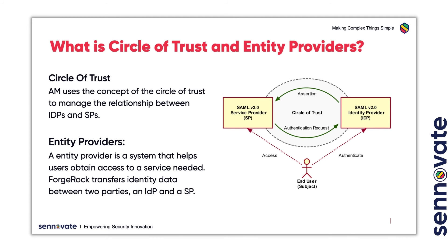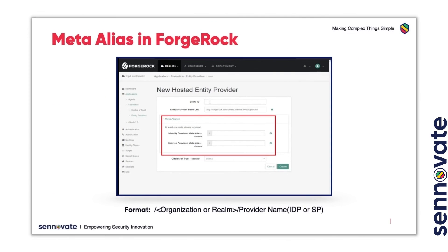The last term here is the meta-alias. It is used to locate the provider's entity identifier and the organization in which it is located. The value is a string equal to the Realm or Organization name coupled with a forward slash and the provider name. For example, slash Suncorp slash travel provider.